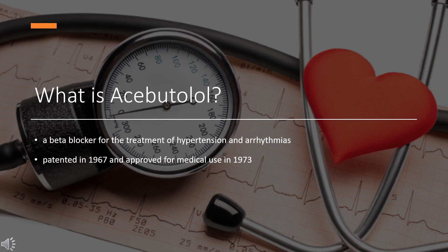Acebutolol, sold under the brand name Sectral among others, is a beta-blocker for the treatment of hypertension and arrhythmias. Acebutolol is a cardioselective beta-1 blocker and has intrinsic sympathetic activity. It is commonly used in the treatment of angina. It was patented in 1967 and approved for medical use in 1973.